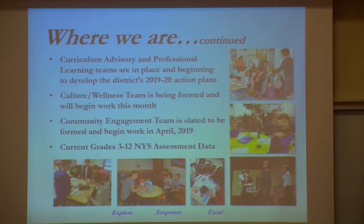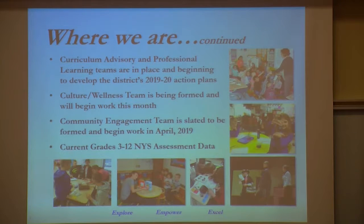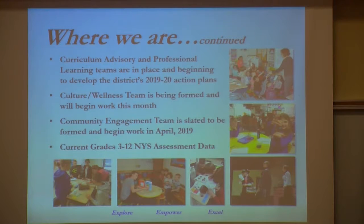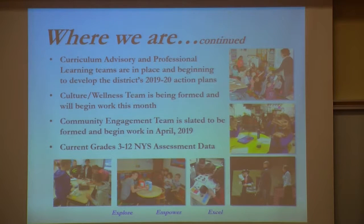They are being formed right now, and they will be beginning work on their entry-level action plan for next year as they develop their team dynamics. The fourth part, the community engagement team, is slated to be formed and begin work roughly around April of this year. Each year we try to get one team up and going before the next one, so we would have two formal action plans in place by end of year and draft initial plans for the other two.